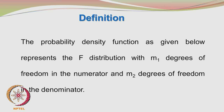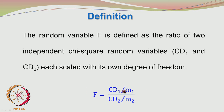We will show the mathematical form for the probability density function representing the F distribution with M1 degrees of freedom in the numerator and M2 degrees of freedom in the denominator. M1 is the degrees of freedom in the numerator, M2 in the denominator. Do not interchange M2 to the top and M1 to the bottom. Chi-square distribution 1 with M1 degrees of freedom is present in the numerator, and chi-square distribution 2 with M2 degrees of freedom is in the denominator.